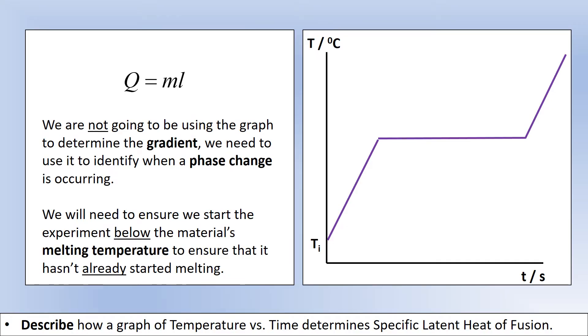So generally speaking when we're dealing with a phase change we're going to be using this equation Q equals ML. That equation says that to change the phase of a substance you need to supply or remove a certain amount of thermal energy, and that depends on the mass and it depends on the latent heat of fusion or the latent heat of vaporization if you're going from a liquid to a gas.